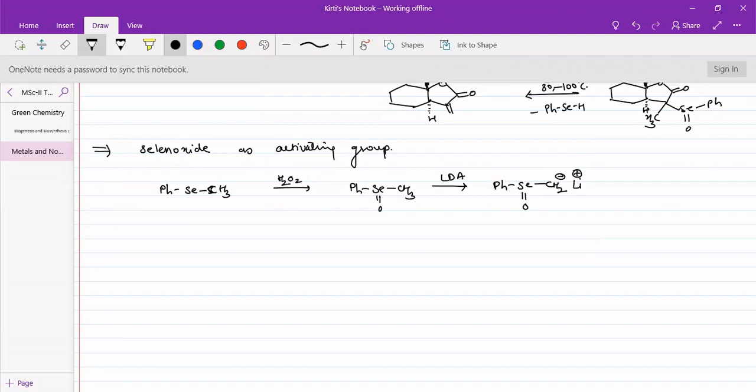And if it is subjected to reaction with an alkyl halide, alpha-beta unsaturated alkyl halide like 3-bromopropene.